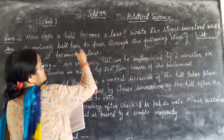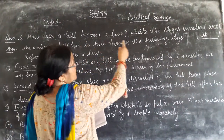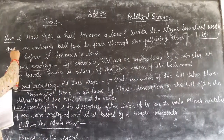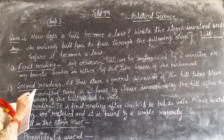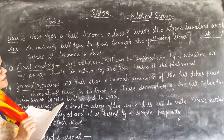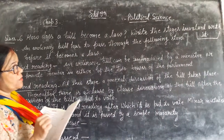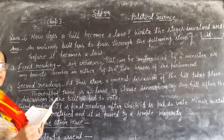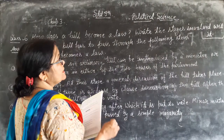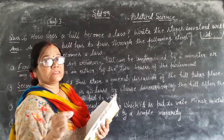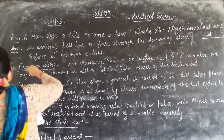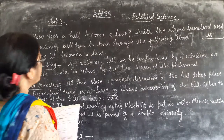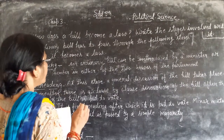Good morning students. It's a standard of Political Science, Chapter 3, question number 6: How does a bill become a law? Write the stages involved with it. An ordinary bill has to pass through the following stages before it becomes a law.